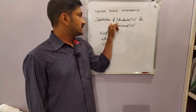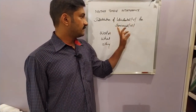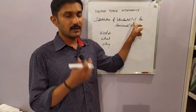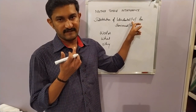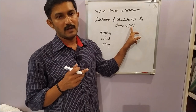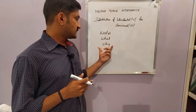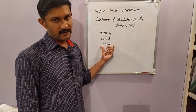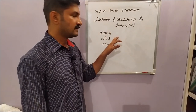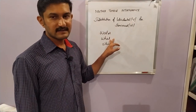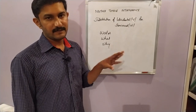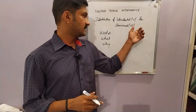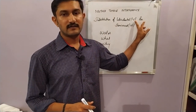Another instance of mispronunciation of consonants is the substitution of the semi-vowel sound 'w' with the labiodental sound 'v'. The labiodental involves the lower lip and upper teeth. These words have to be pronounced as 'water', 'what', 'why'. Indian learners tend to pronounce them as 'vater', 'vhat', 'vhy', 'vhich', 'vhen'. We have to clearly distinguish these two sounds — one is 'w' and the other is 'v'.